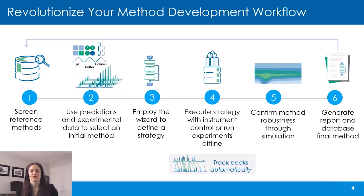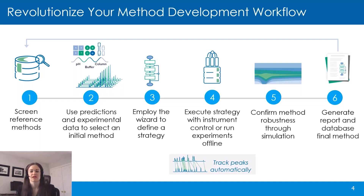Searching reference methods and using predictive tools can help you get a superior starting point and allow you to intellectually optimize your method. In the software, there are tools that can help you select the right column for your study, as well as tools to help with pH selection and buffer suggestion. One of the tools we have is Autochrome, which has a wizard that can help define a strategy for optimizing several parameters like pH, gradient, and temperature, while setting success criteria like resolution, retention factor, and runtime before you even run a set of injections. Once your strategy has been defined, the system will suggest experiments and allow you to execute them.